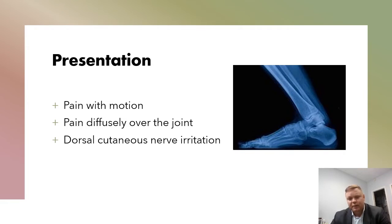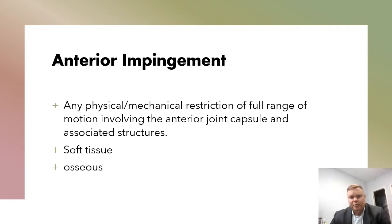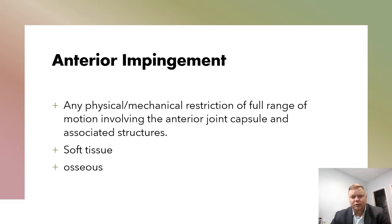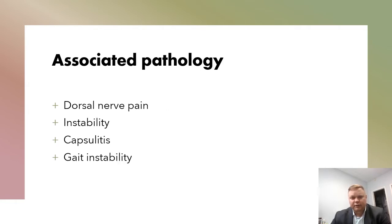Anterior impingement is generally anything that restricts range of motion or causes pain at end range of motion. Soft tissue impingement is the most common, but osseous impingement does also occur, particularly in the context of arthritic deformities, post-traumatic deformities, or other structural problems associated with the anterior ankle.